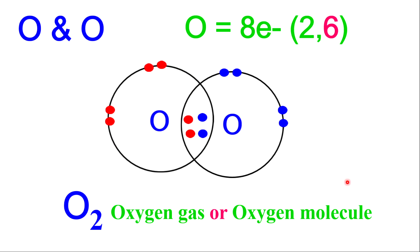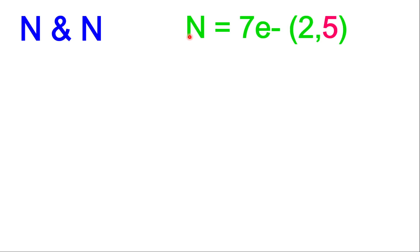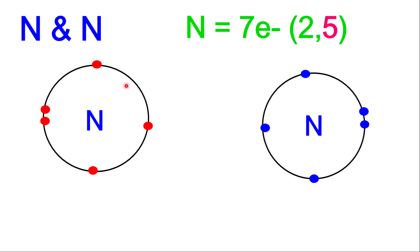Now let's look at our next example — bonding nitrogen and nitrogen. We're going to establish the valence electron. Nitrogen has 7 electrons, therefore the electron configuration is 2 and 5, making the valence electron 5. Let's draw our atoms — each atom of nitrogen must have 5 electrons. Once we establish that, we need to figure out how many electrons are needed by each atom. Since there are 5 valence electrons, each atom will need 3 more electrons to become 8.